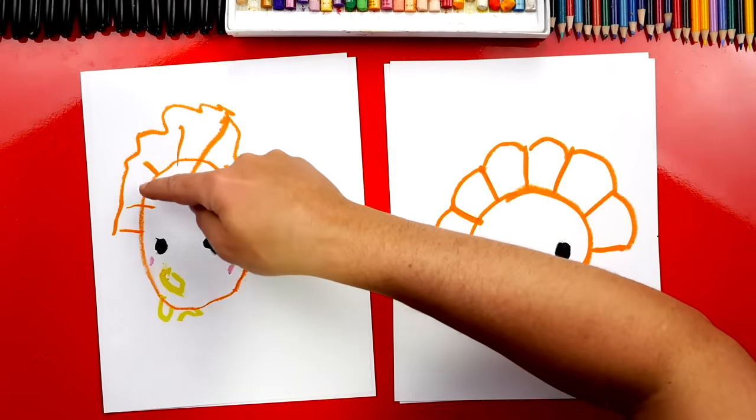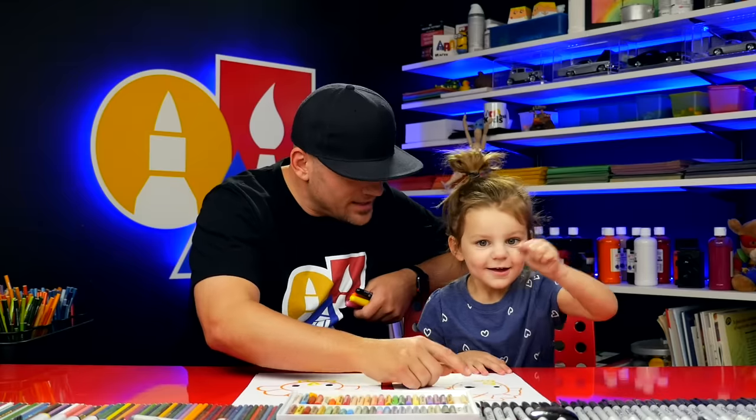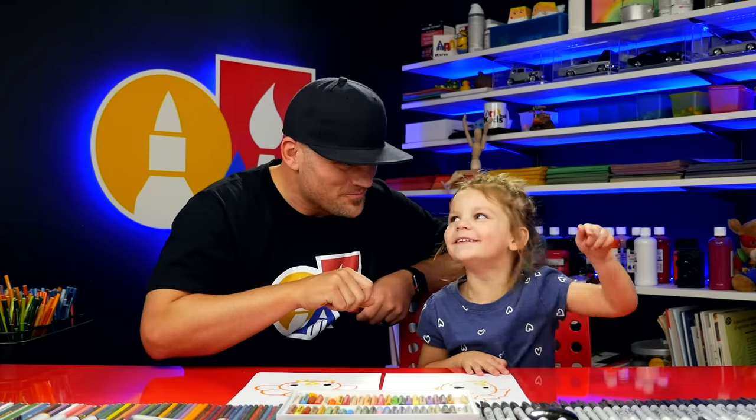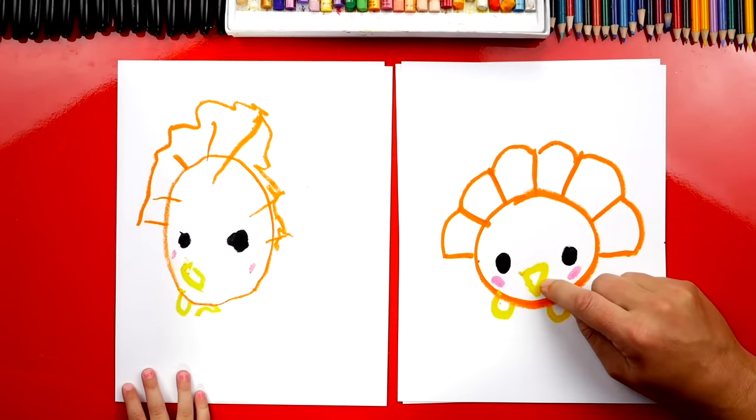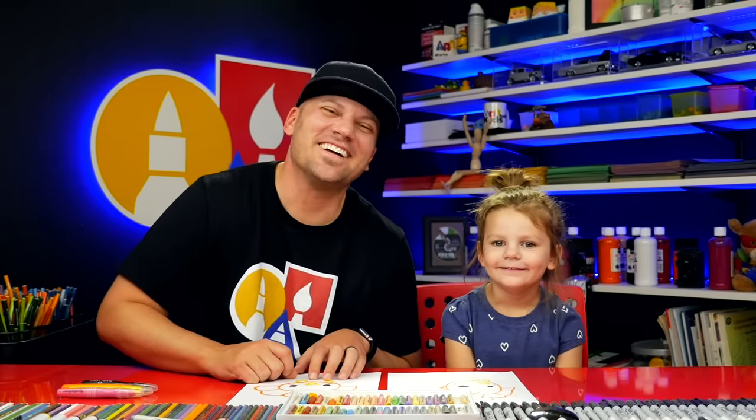What shapes did we use? We drew a circle. A circle. What shape are the eyes? Circle. And what is the shape for the beak? What was that? A triangle. A triangle.